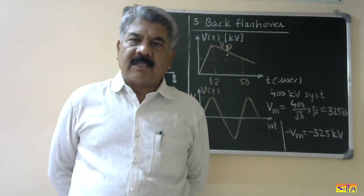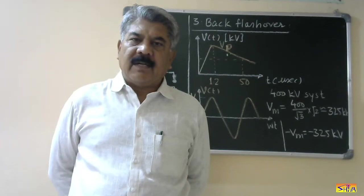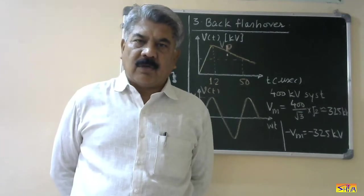After that I had started explaining the various terms associated with the protection of transmission line against direct lightning strokes. First term was pre-discharge current. Second was isochronic level. I explained both these terms and then I had solved one numerical on isochronic level.